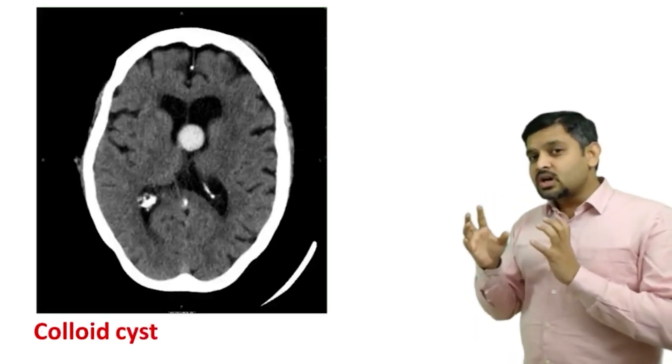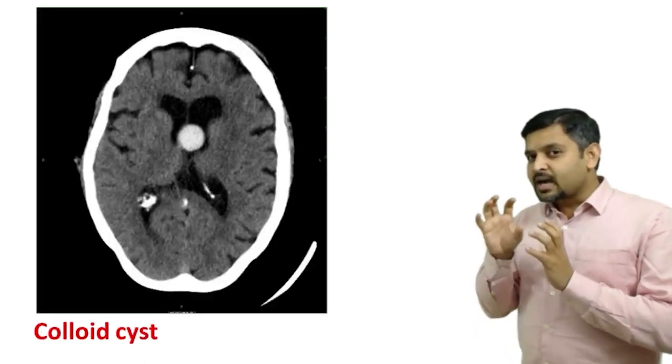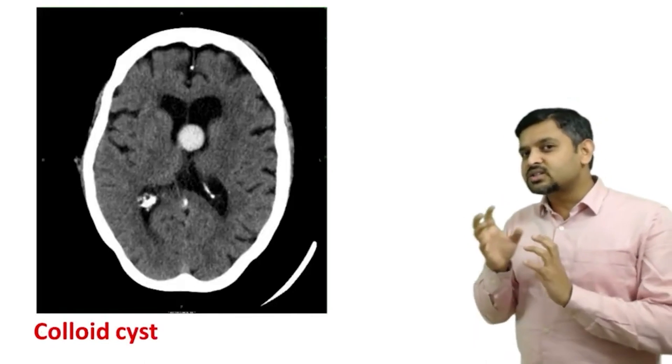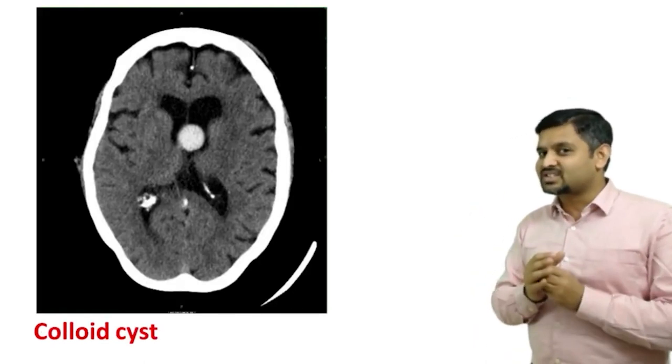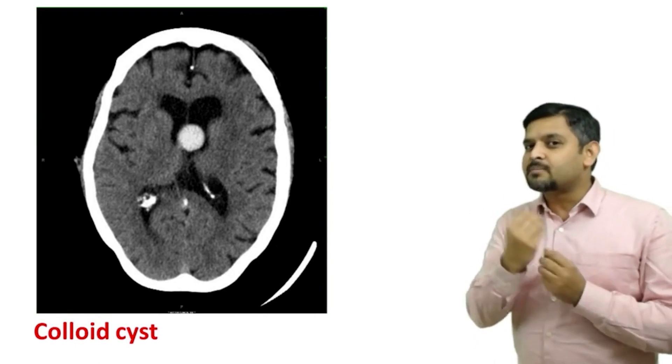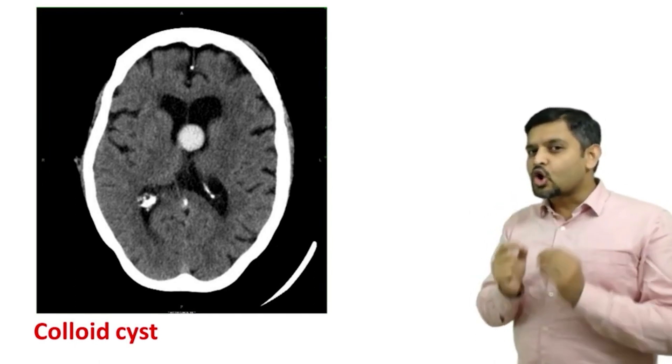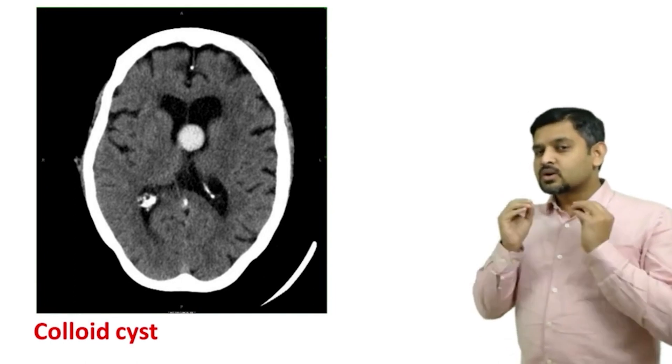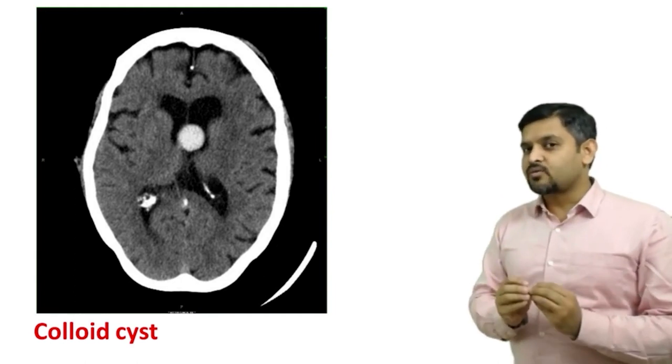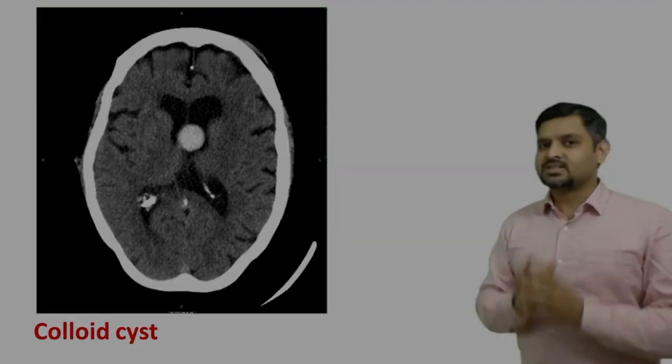Sometimes you see a case where a hyperdense lesion is seen on a CT scan, even on a non-contrast CT, in the region of the anterior part of the third ventricle. Think of a benign colloid cyst. These are some of the common imaging appearances of sellar and parasellar masses.